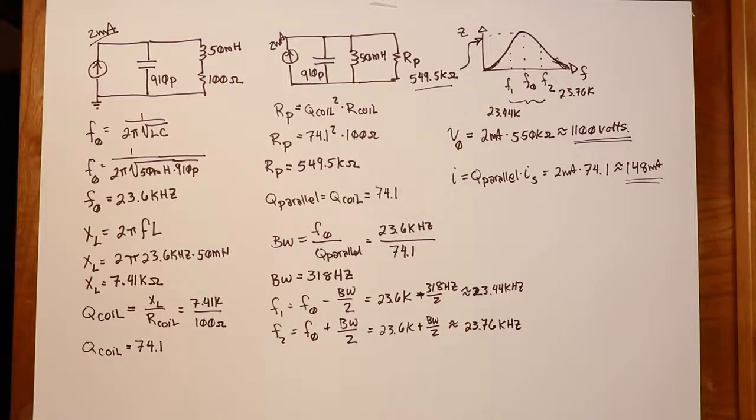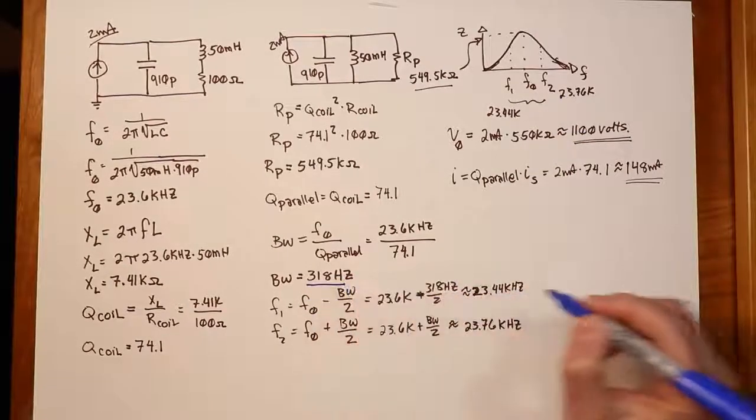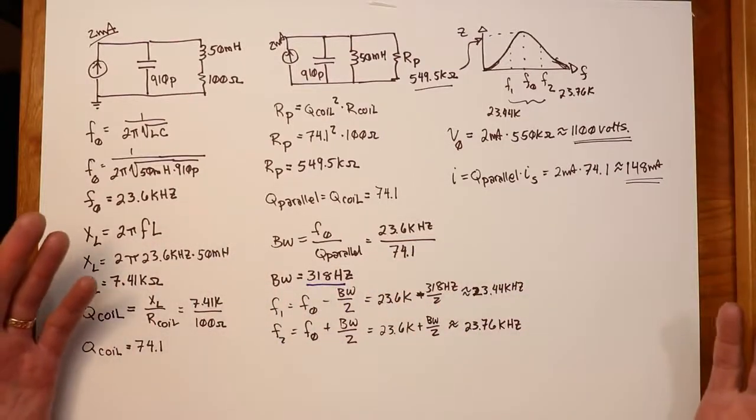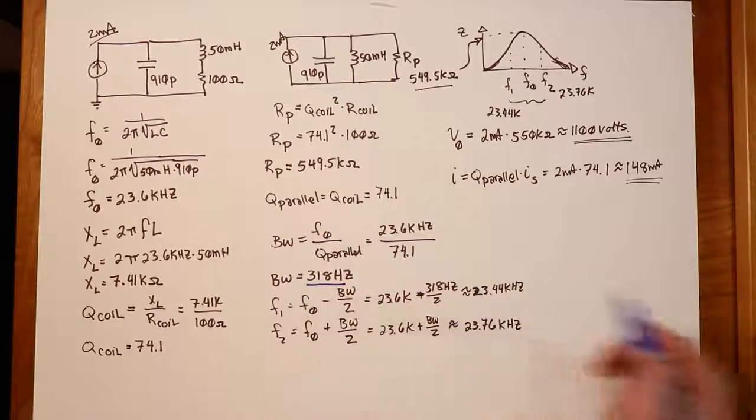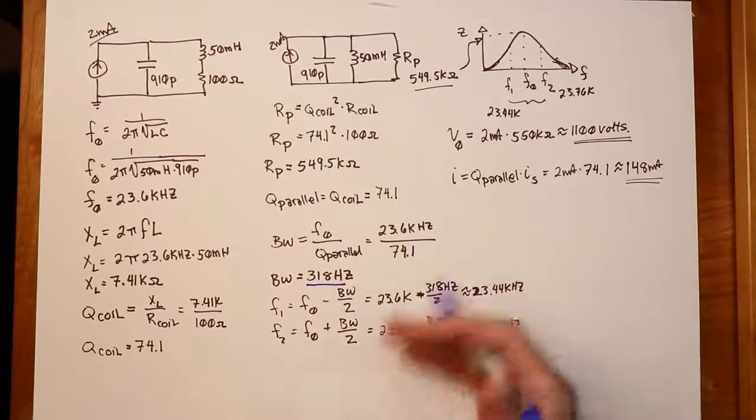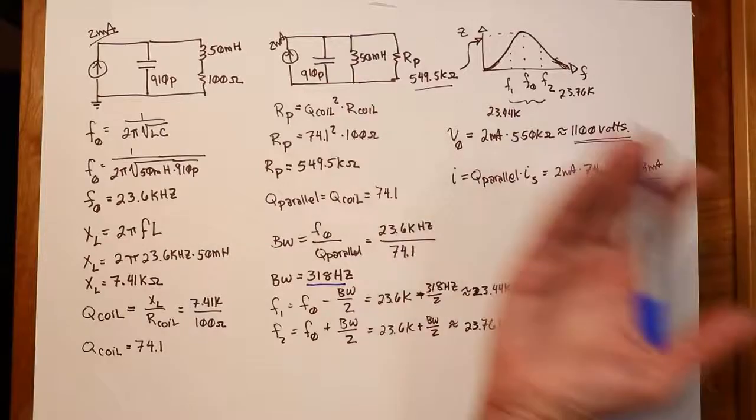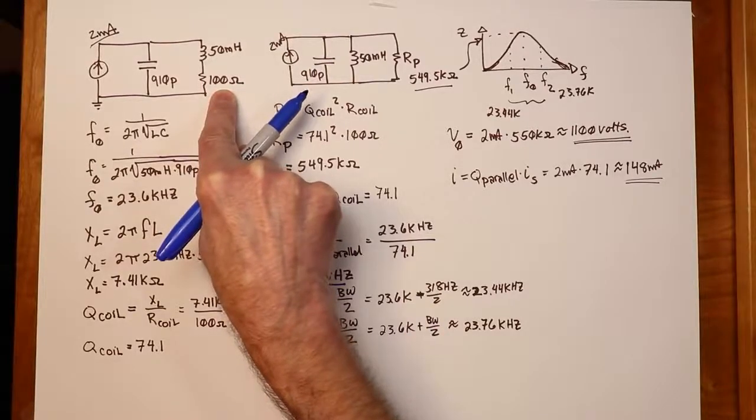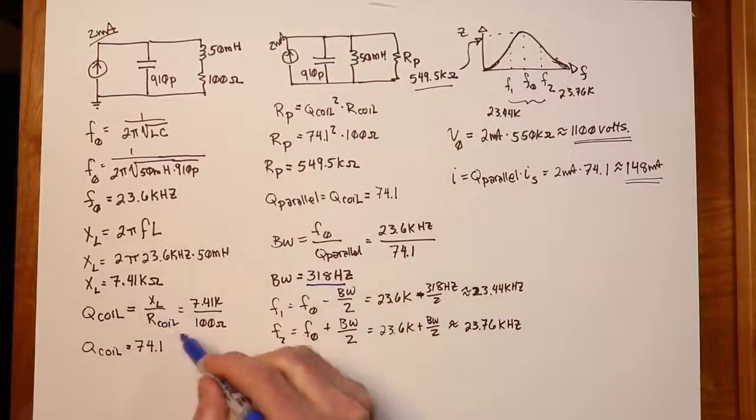Now, what if we wanted to change the Q of this system for our particular application? Suppose this bandwidth is a little too tight. 318 hertz is a little too tight. What do I do? Well, you can always broaden something by adding resistance in parallel. You can't make it tighter. Now, if you want it to be tighter, in other words, if you said, oh, I need a 200 hertz bandwidth, let's say, instead of 318, that requires a higher Q. And, of course, parallel Q, the system Q, can never be higher than the Q coil. So, you're going to have to go and find yourself a better inductor. In other words, something with a smaller value for R coil at this particular frequency.